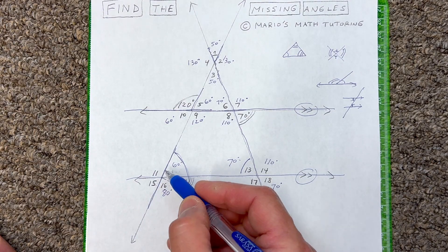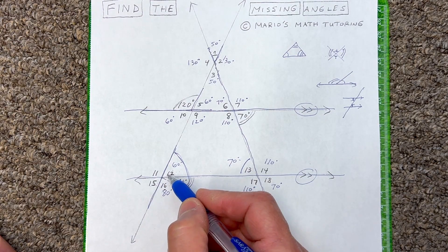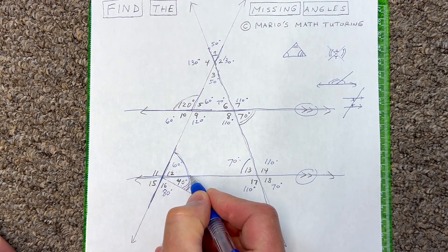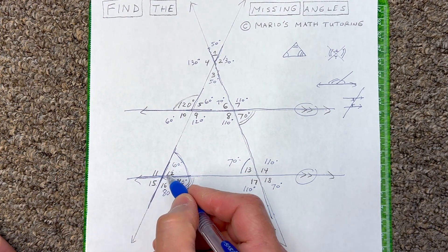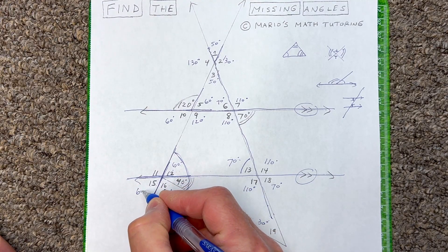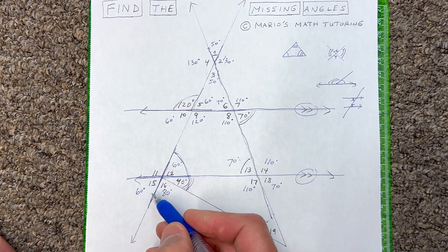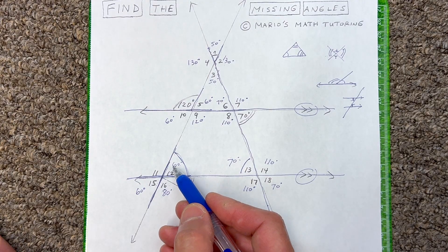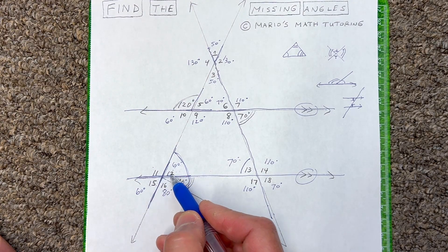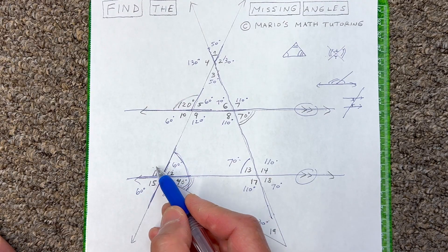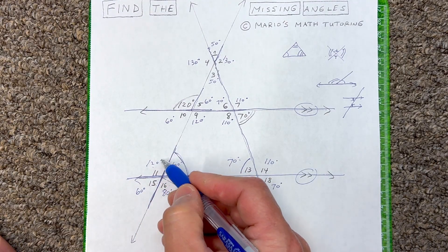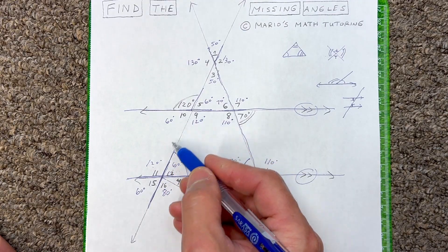Now for angles 15 and 12: you can see there are two straight intersecting lines, and if I continue these lines, angles 12 and 15 are directly across from each other — so angle 15 is 60 degrees. This angle and the adjacent angle form a linear pair, so if angle 12 is 60, angle 11 would be 120. Or you could use alternate interior angles with angles 9 and 11.